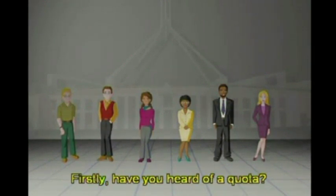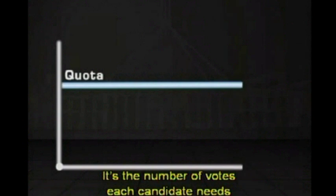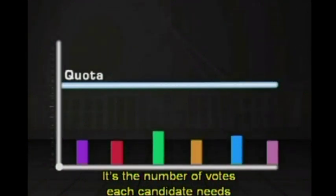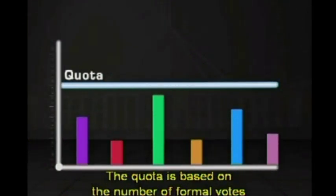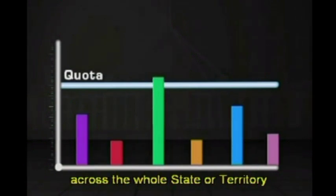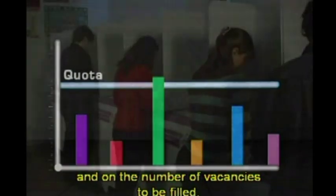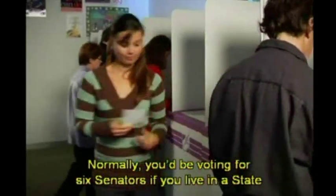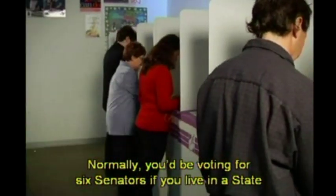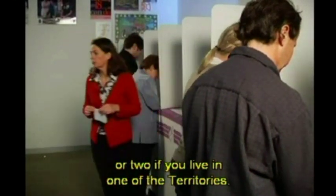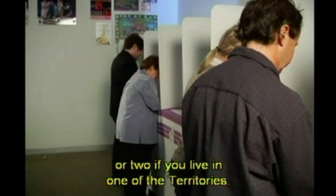Have you heard of a quota? It's the number of votes each candidate needs to be elected to the Senate. The quota is based on the number of formal votes across the whole state or territory, and on the number of vacancies to be filled. Normally, you'd be voting for six senators if you live in a state, or two if you live in one of the territories.